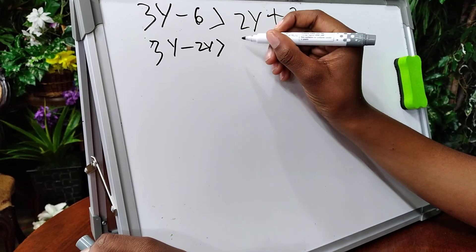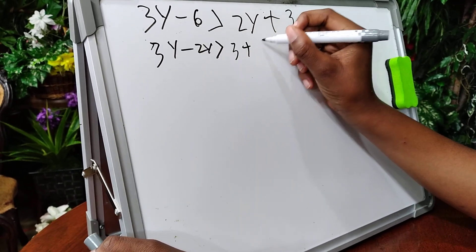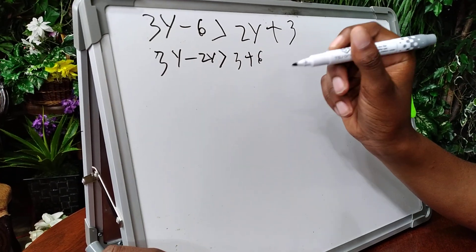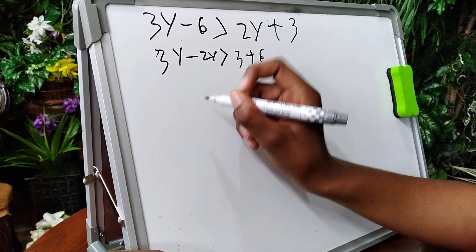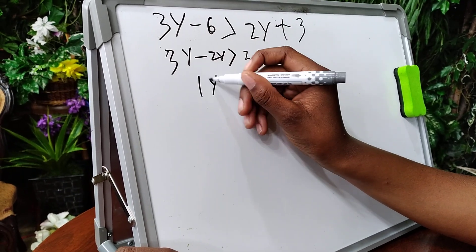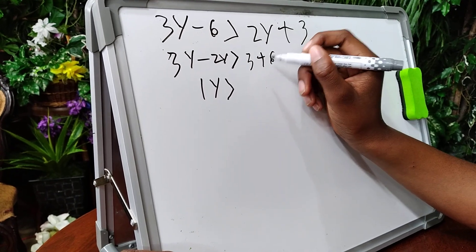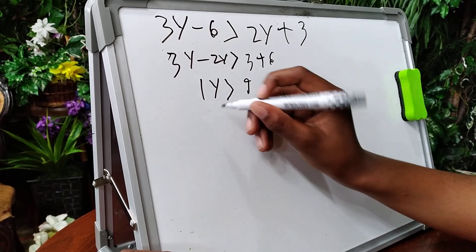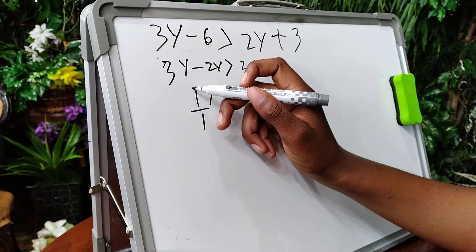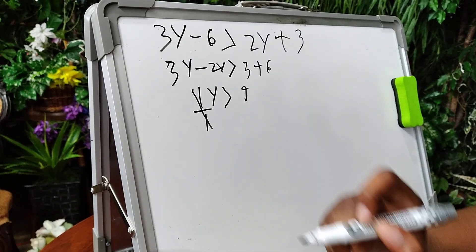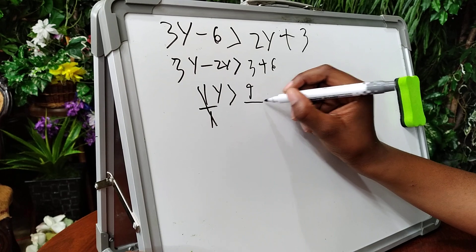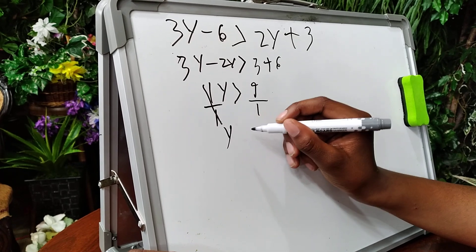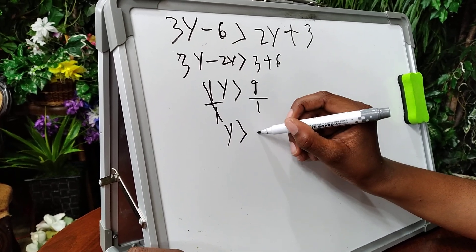So it would be 3y take away 2y, which equals 1y. And on the other side, 3 plus 6 equals 9. Basically, the 1 cancels itself out when you divide, so y is greater than 9.